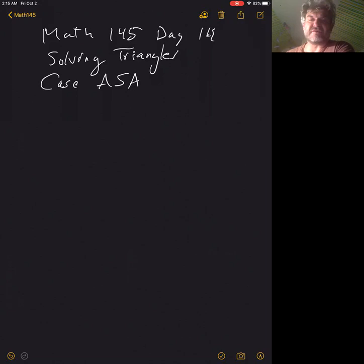Hello, this is Math 145 Day 14. We got a few more cases to deal with in this business of solving triangles. So let's talk about the case ASA - that means two angles are given and the side in between them.